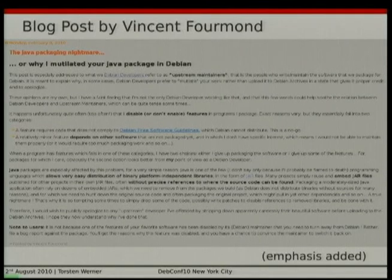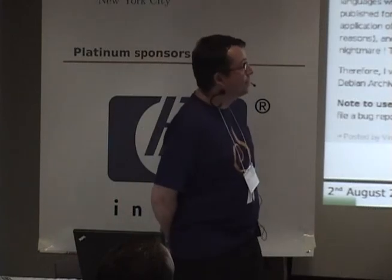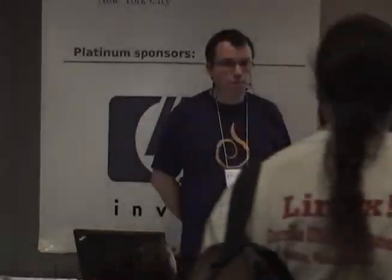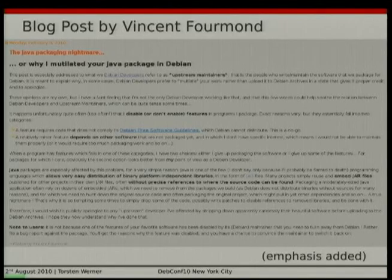The motivation for my talk was a blog post by Vincent, a contributor to Debian, with the title 'The Java Packaging Nightmare.' He writes about the problem of upstream code where he has to disable parts of it to get it compiled at all. It's a lot of work to find and build the dependencies of some code, and the dependencies of the dependencies and their dependencies — quite a recursive approach. The major problem is that Java is often distributed in a binary platform-independent format, which makes it very easy to copy jar files and use them. But that's not acceptable for Debian main.